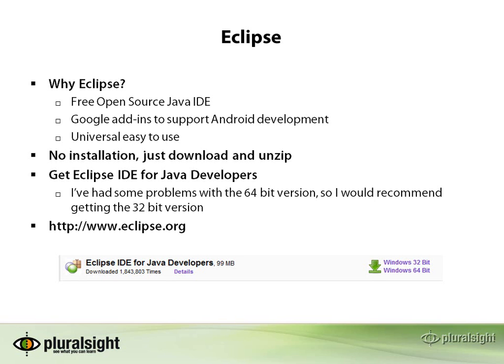I'm also going to recommend that the version of Eclipse that you get is the Eclipse IDE for Java developers. There are several versions and lots of different packages out there that you can choose from. In fact, some third-party vendors bundle up different Eclipse installations, which makes things rather confusing, especially with all the plugins. I'm also going to recommend that you go ahead and get the 32-bit version of the Eclipse IDE. I had some problems with the 64-bit version on Windows 7, and you don't really get any advantage using the 64-bit version, so I'd recommend going ahead and just installing the 32-bit version.